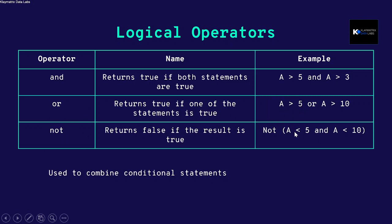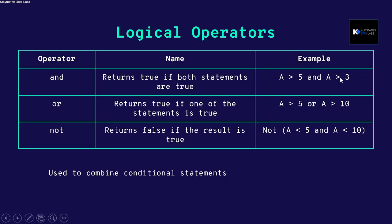NOT takes whatever the output is and gives you the opposite — if the result is true it gives false, and if false it gives true. Also, for AND, if either condition is false — for example if a is 4, then '4 greater than 5' is false and '4 greater than 3' is true — since one condition is false, the entire AND statement becomes false.